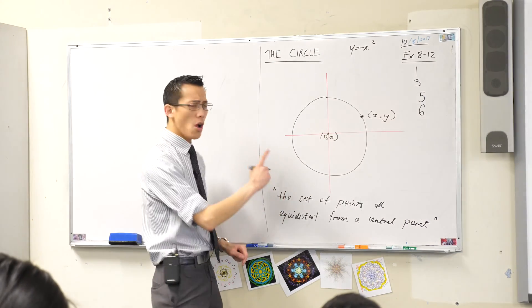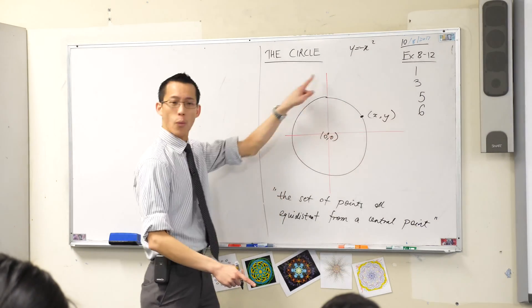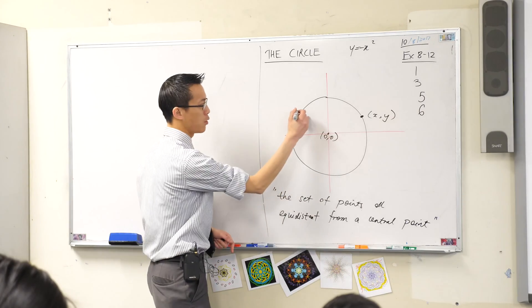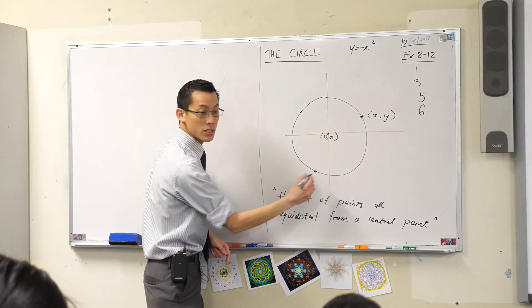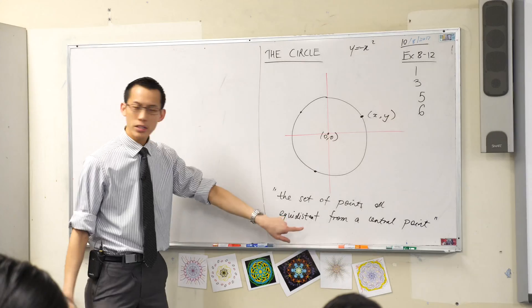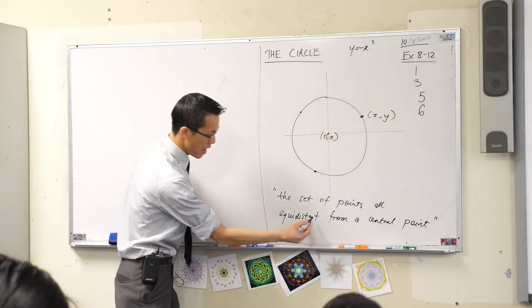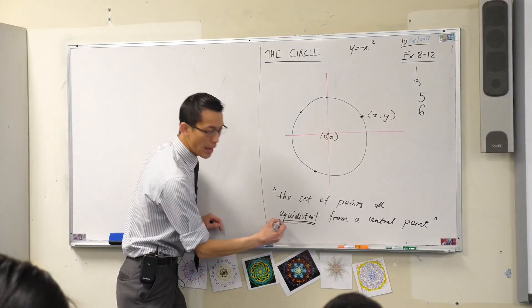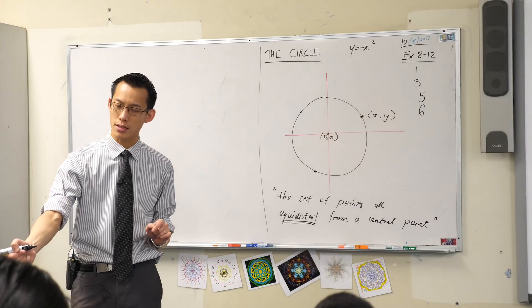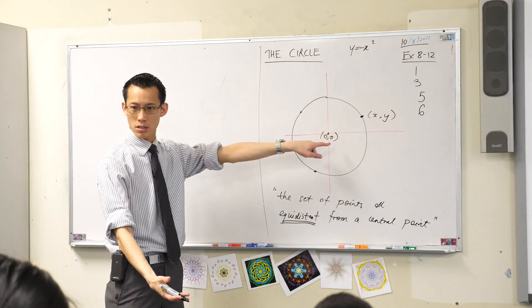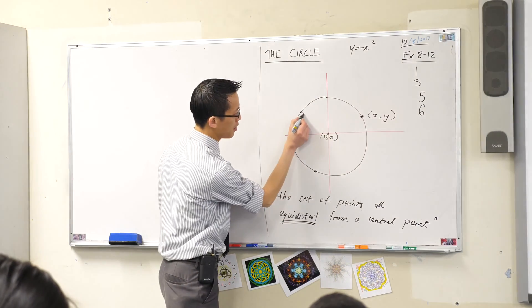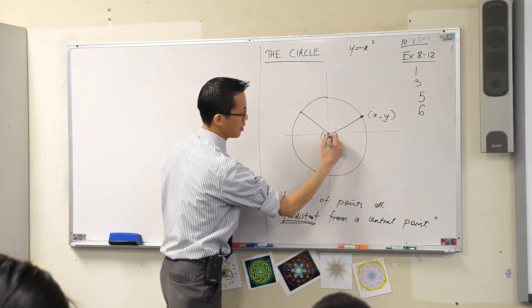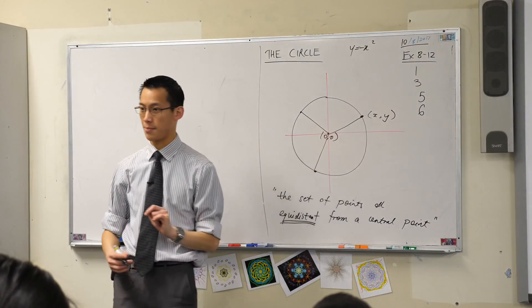Remember we said that no matter where your point is—if I put the point over here or down here—according to this definition, every point is the same distance from the origin. Do you agree? So this distance here and this one here and that one there, all the same.